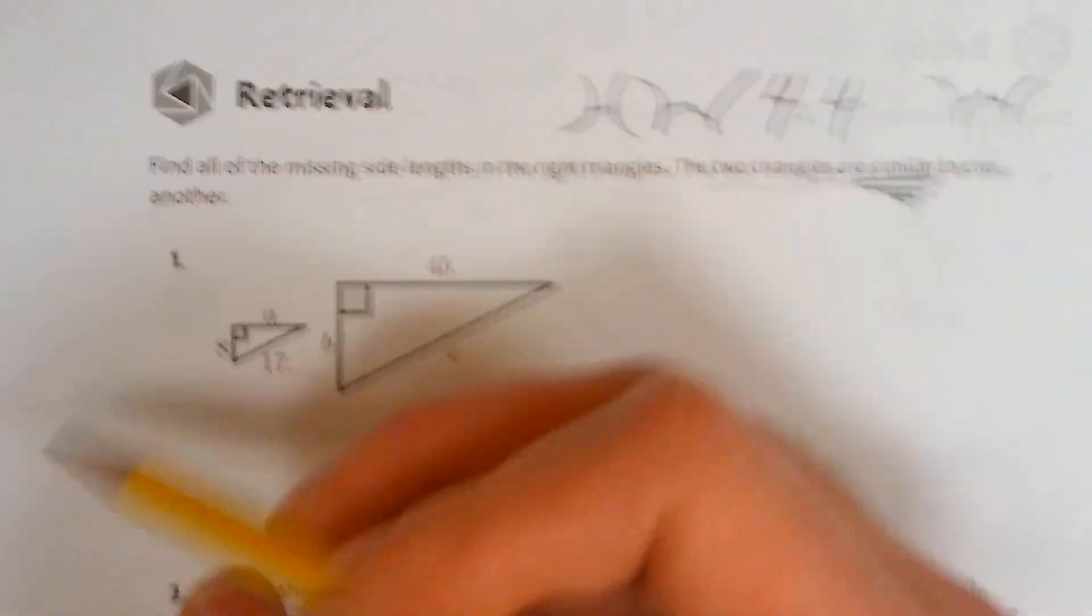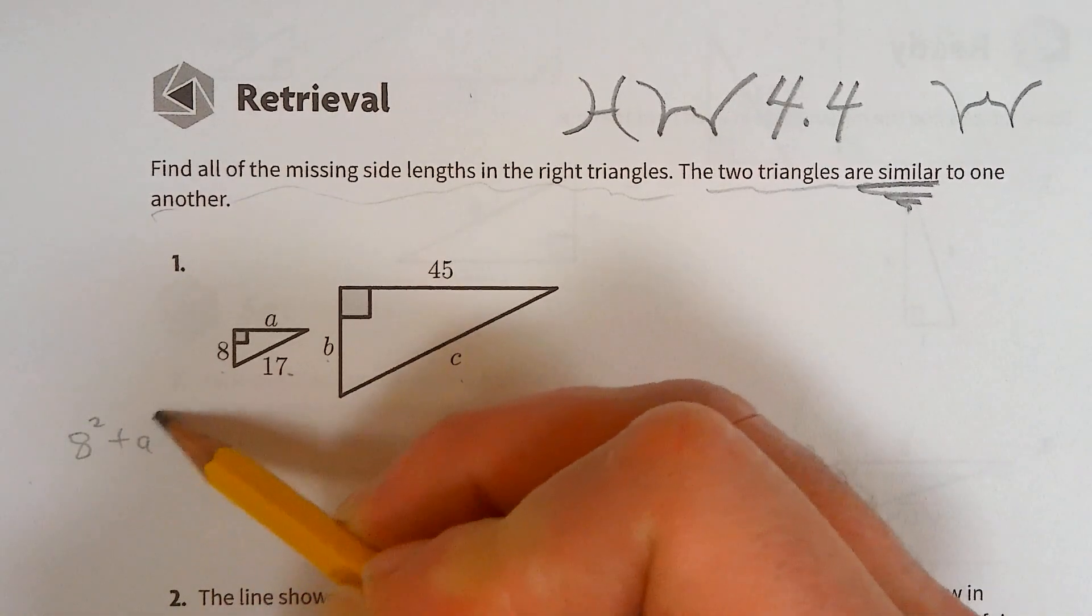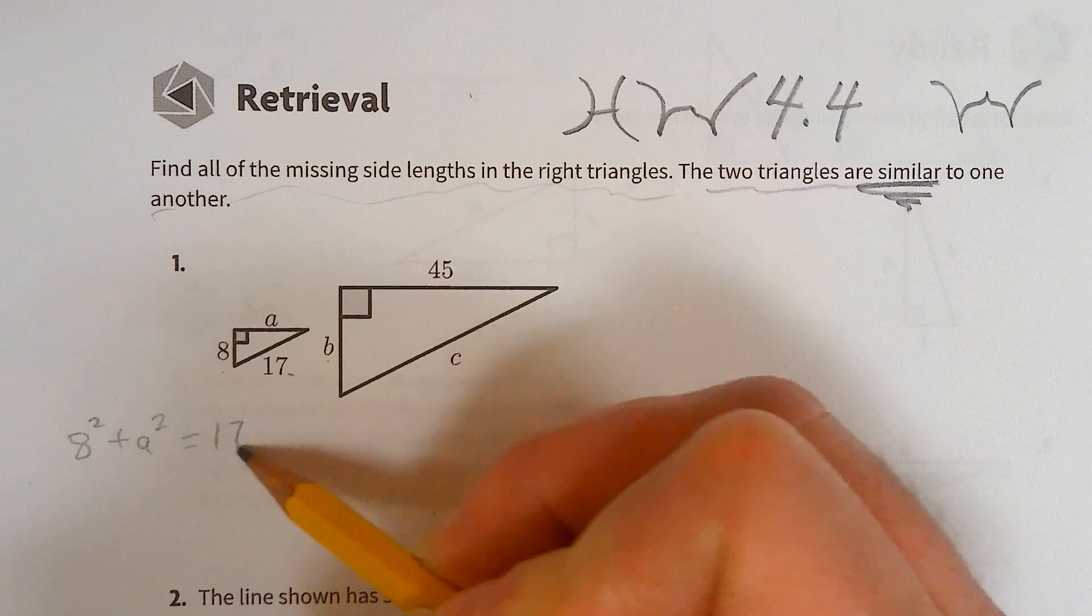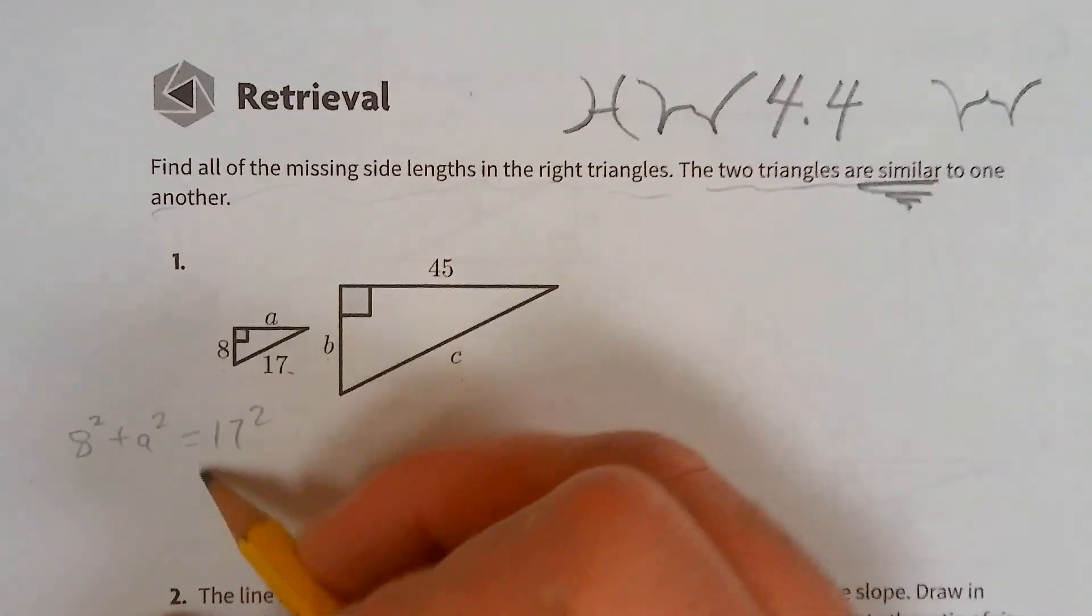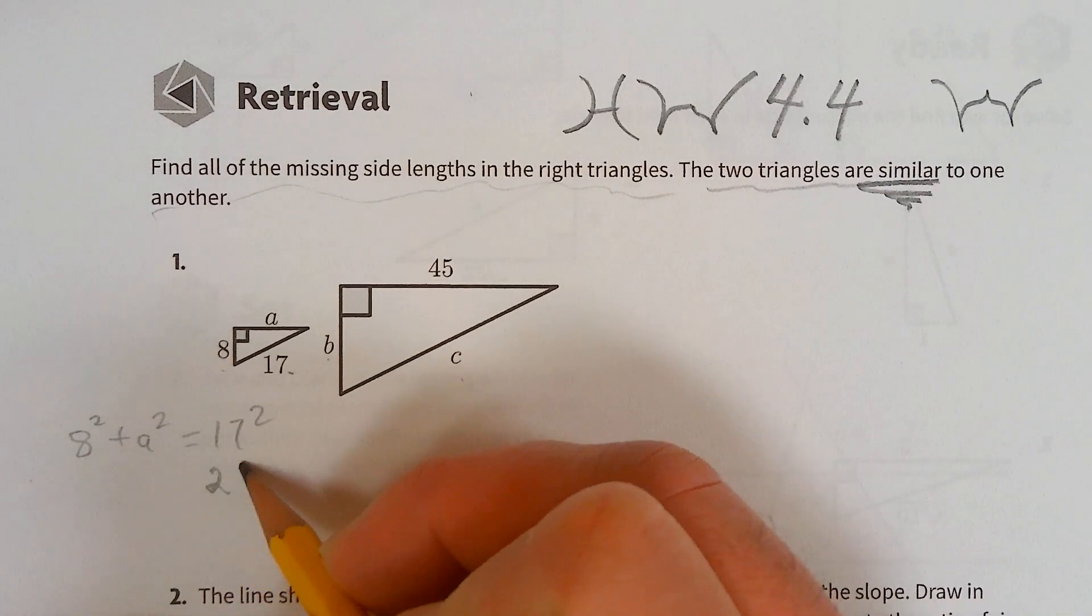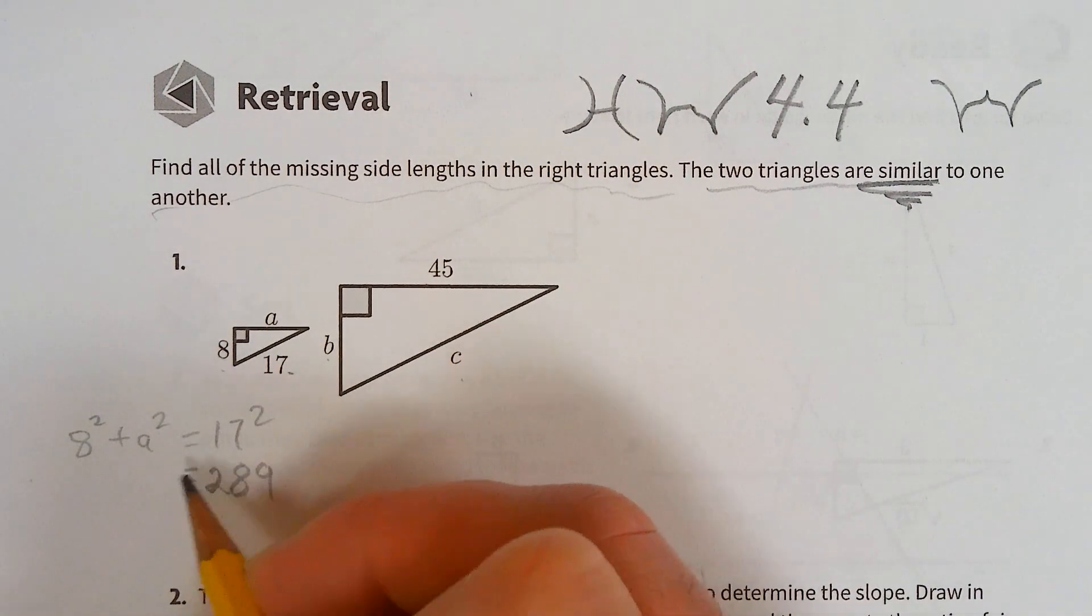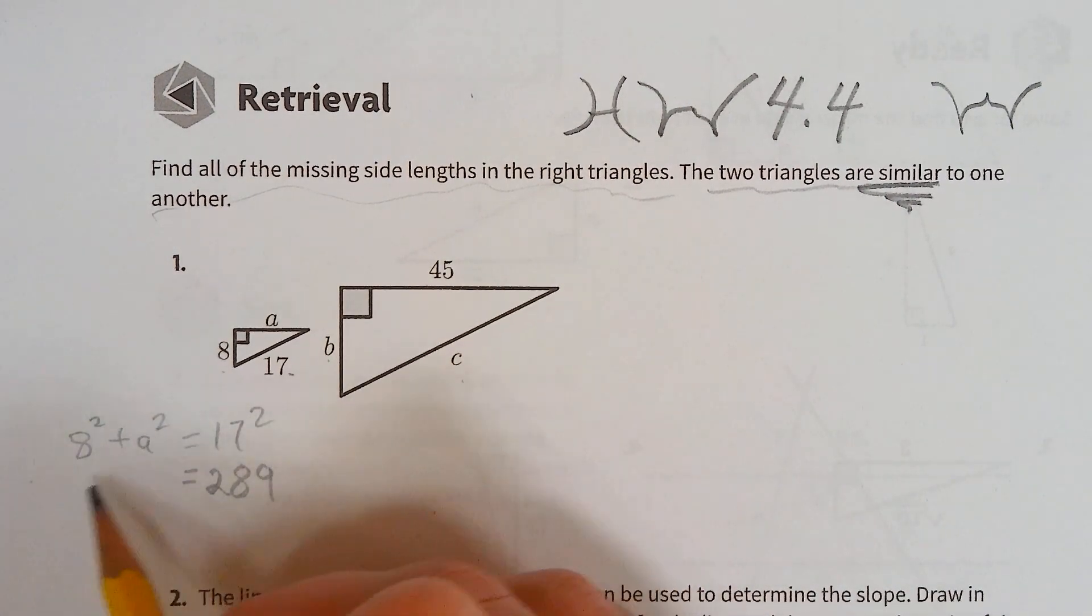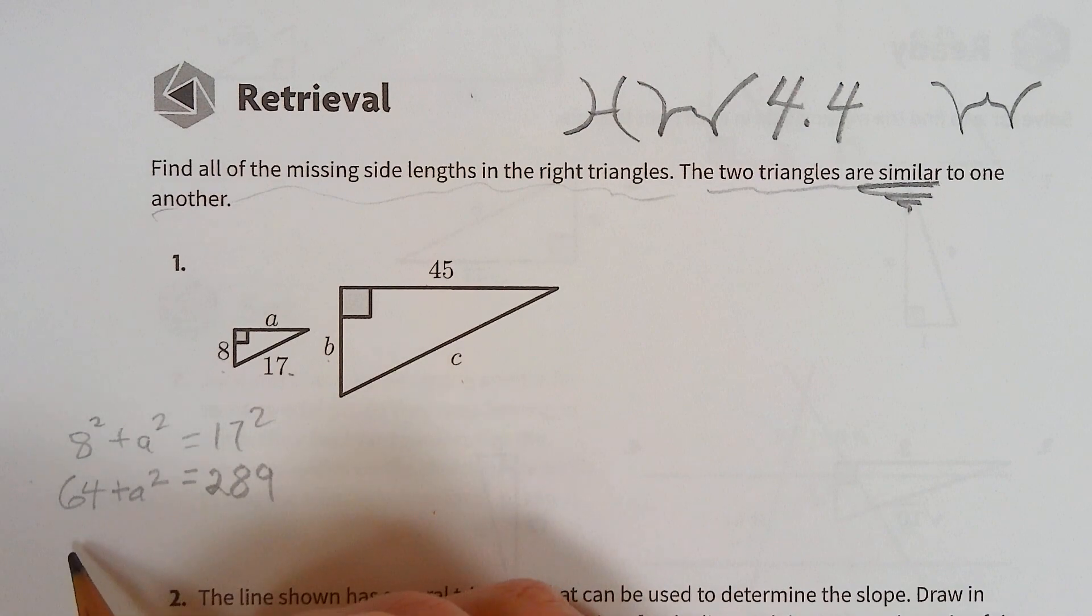So this is a squared. I know 17 squared is 289, 16 squared is 264, wait - 15 squared is 225, 14 squared is 196.